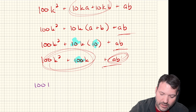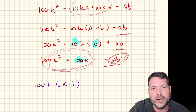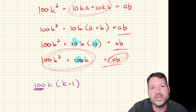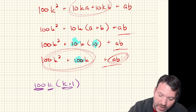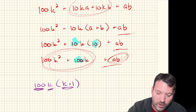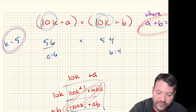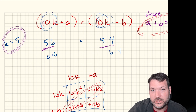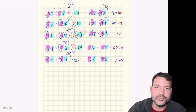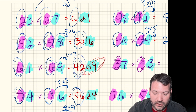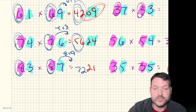We can factor further: 100k² + 100k = 100k(k + 1). The 100 accounts for placement at the hundreds digit and beyond, and k times (k + 1) is the tens digit multiplied by the next consecutive integer. Since k = 5 for numbers in the 50s, we do 5 times 6; for the 60s we do 6 times 7, then 7 times 8, 8 times 9, and so on. That's exactly why the trick works.